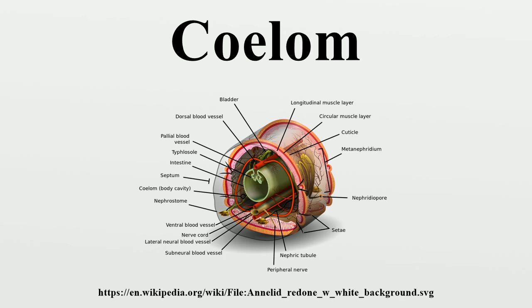Pseudocoelomate animals have a pseudocoelom, which is a fully functional body cavity. Tissue derived from mesoderm only partly lines the fluid-filled body cavity of these animals. Thus, although organs are held in place loosely, they are not as well organized as in a coelomate. All pseudocoelomates are protostomes; however, not all protostomes are pseudocoelomates. An example of a pseudocoelomate is the roundworm. Pseudocoelomate animals are also referred to as hemocoelomate or blastocoelomate.